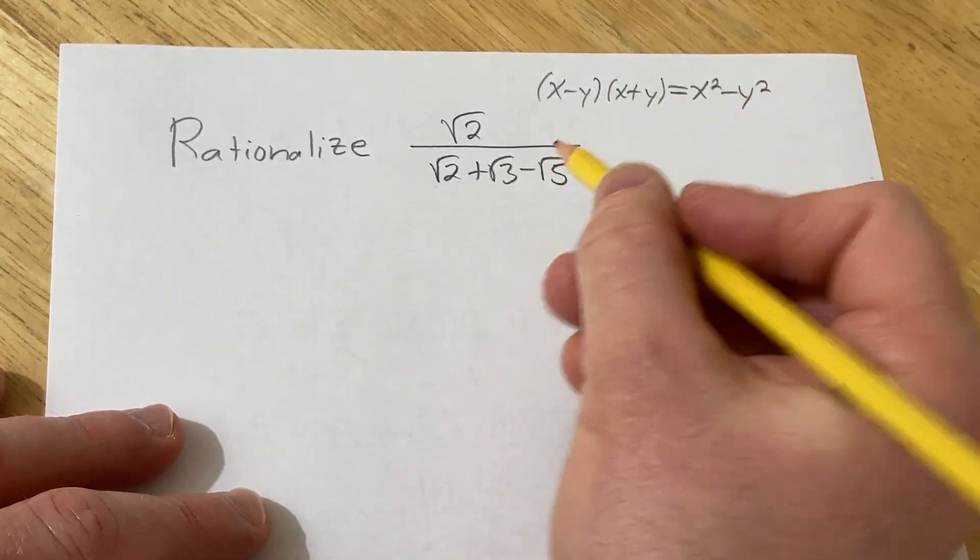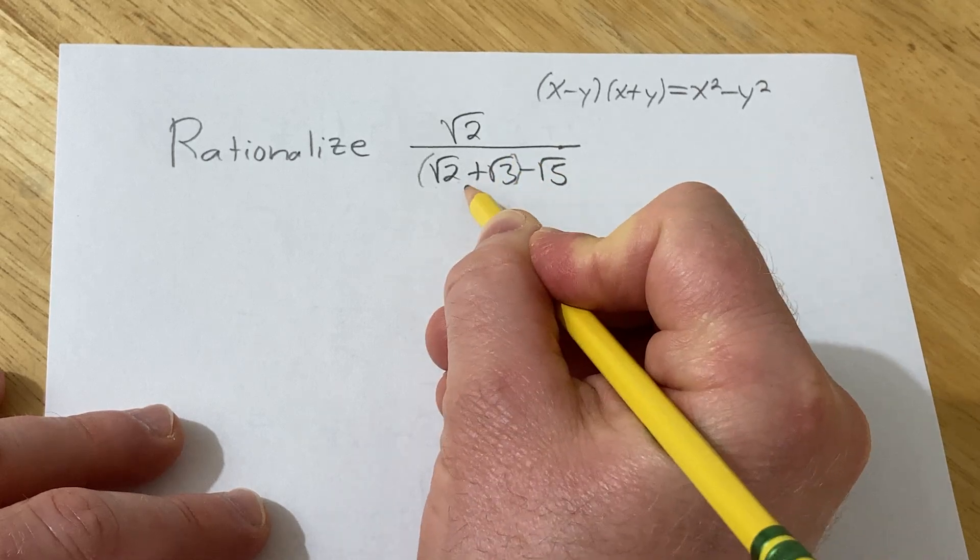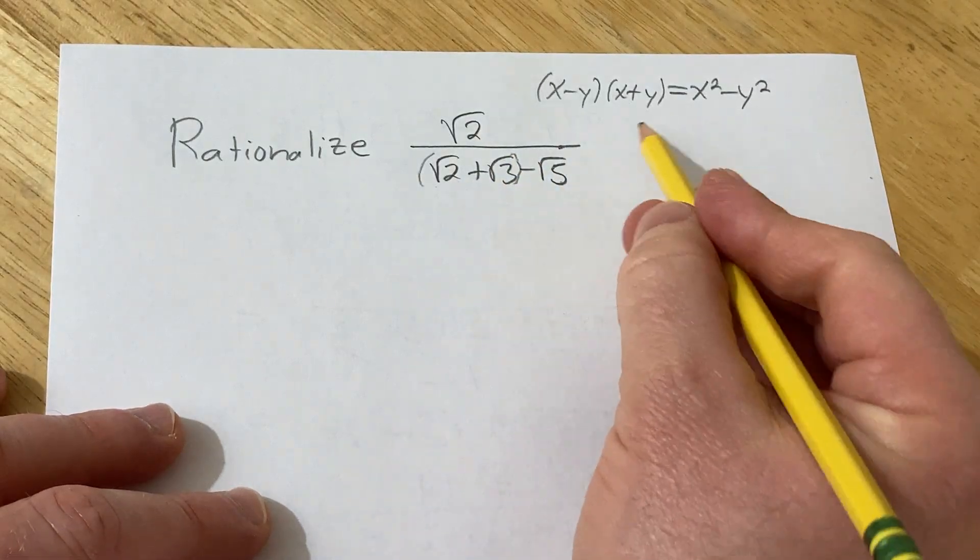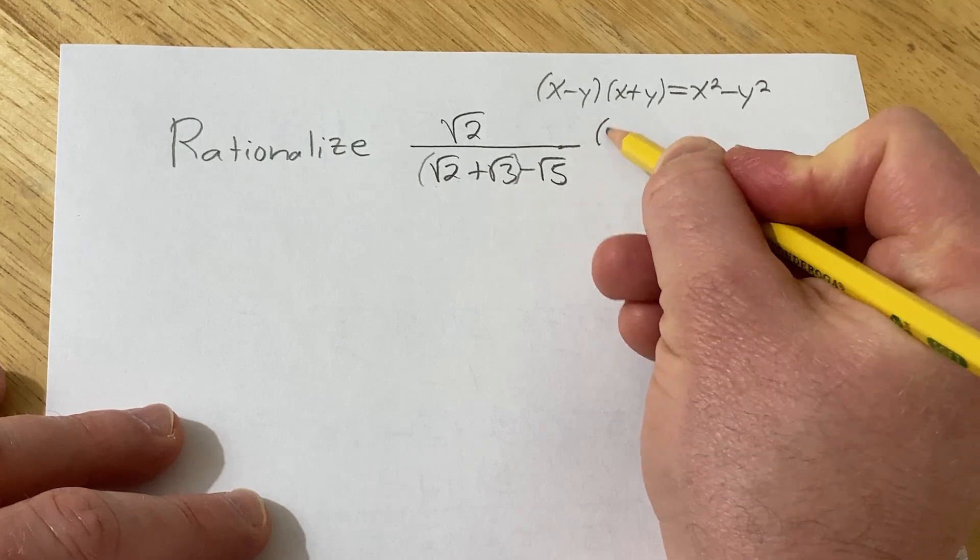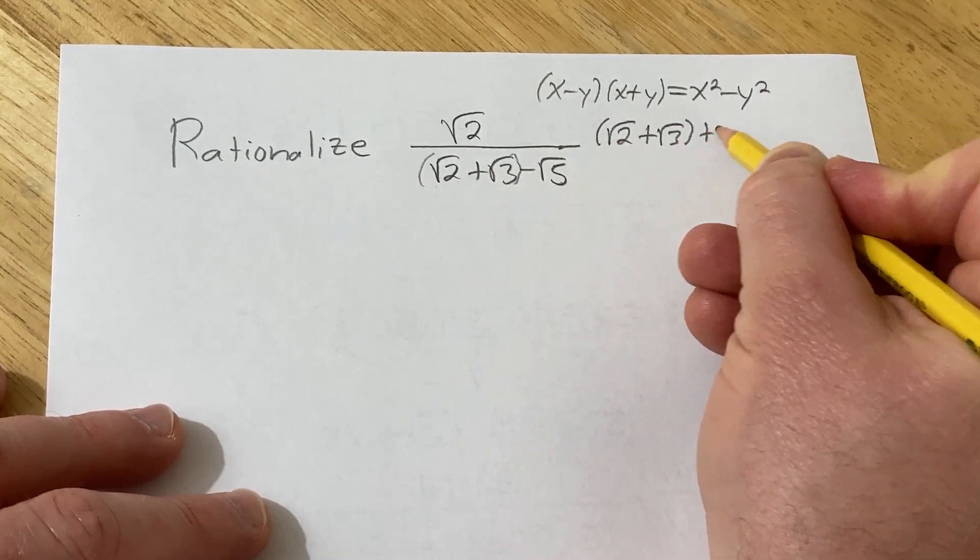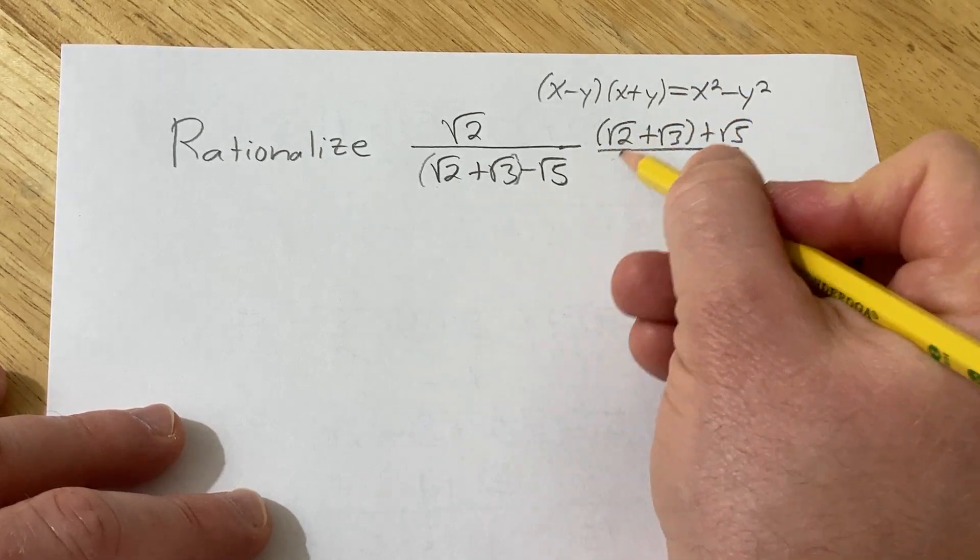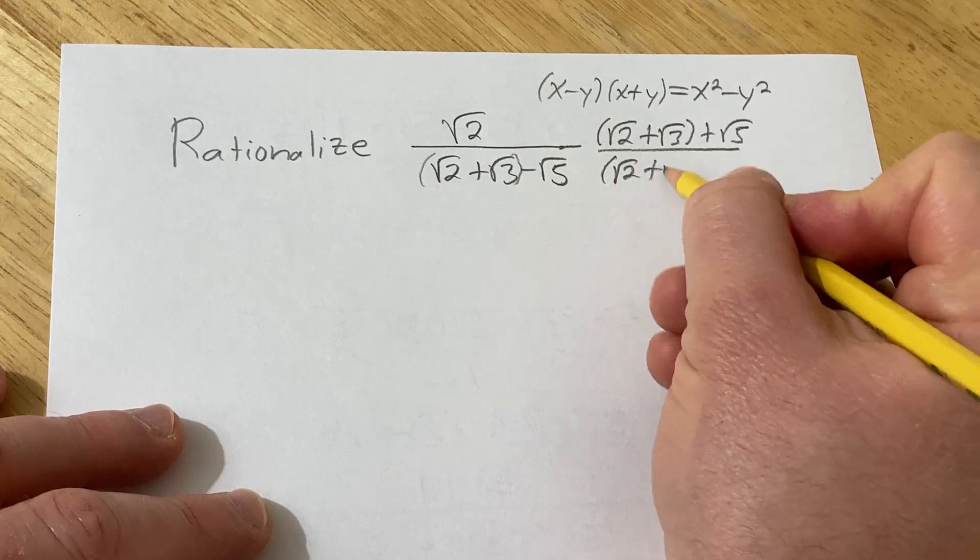So in this particular problem we're going to start by rationalizing. We're going to think of it like this. This is our x, this is our y. So now we just need the x plus y. So it'll be square root of 2 plus square root of 3 plus square root of 5. And then we're basically multiplying by 1 so you have to write it twice.